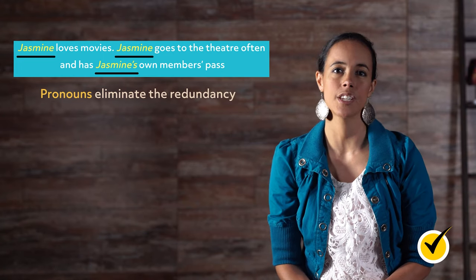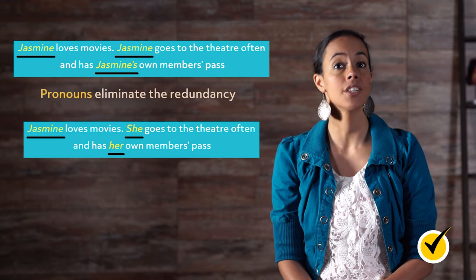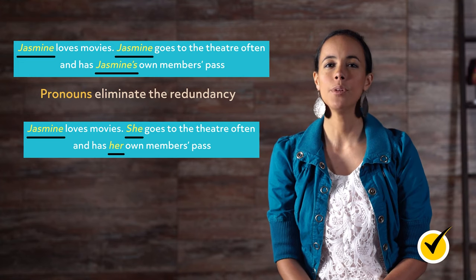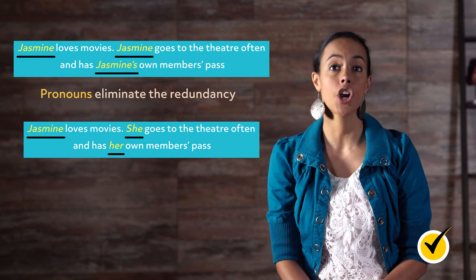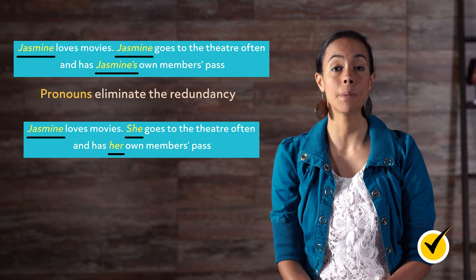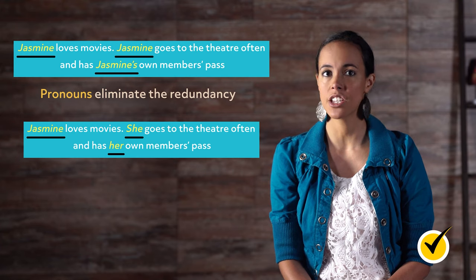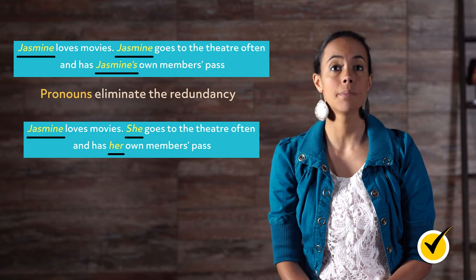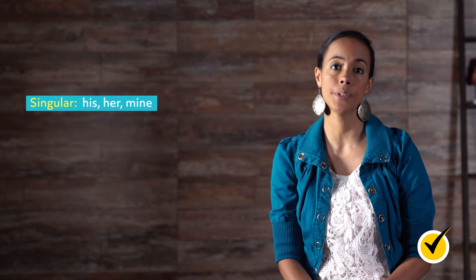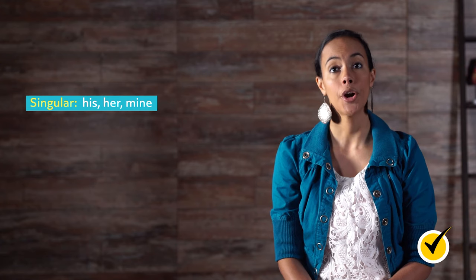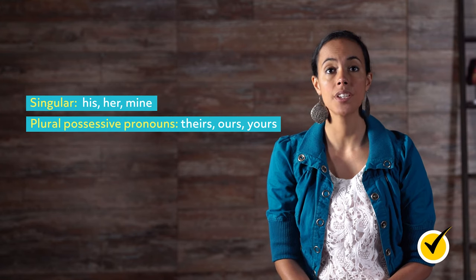Pronouns can also be possessive. Jasmine owns a member's pass, so instead of saying Jasmine's pass, we use the possessive pronoun her. Other possessive pronouns include singular: his, her, mine; and plural: theirs, ours, and yours. Today, we'll also talk about nominative and objective cases. Nominative case refers to a noun performing an action or verb. Objective case is a noun that is having an action taken upon it.